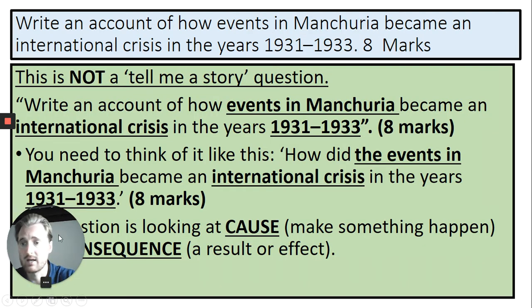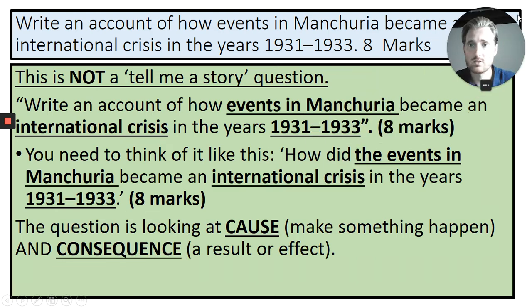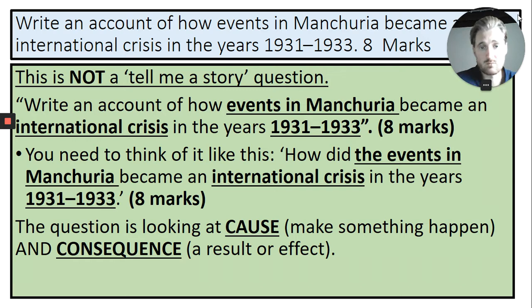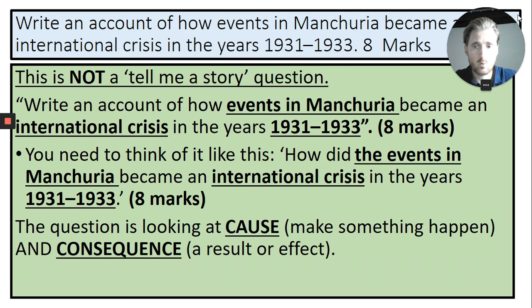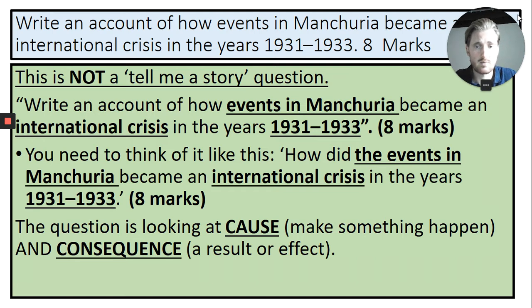The reason why 'write an account' is sometimes difficult in terms of wording is it's not — do not tell me a story. You need to think of it like: how did the events in Manchuria become an international crisis? So each event becomes an international crisis. The key skills you're looking at here are cause and consequence. What caused them to invade Manchuria? We know that was the Great Depression. But what was the consequence? Invading another country went against what the League of Nations said — it caused an international crisis, and ultimately, because they blamed Japan, they left the League of Nations.